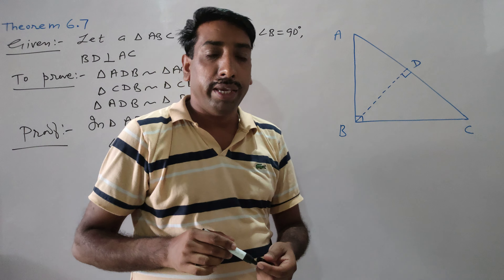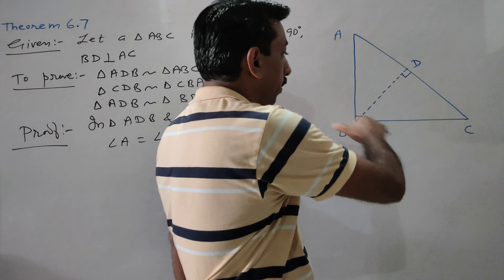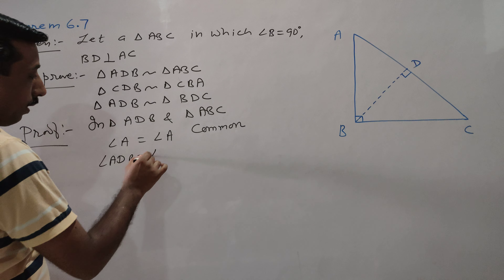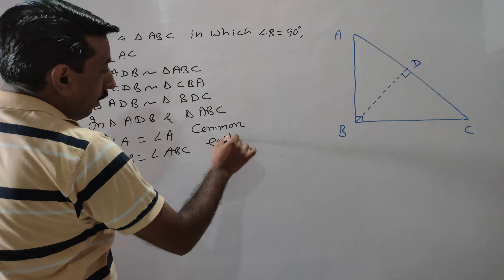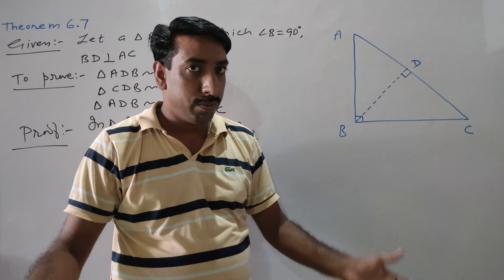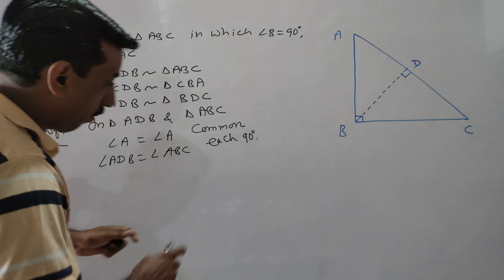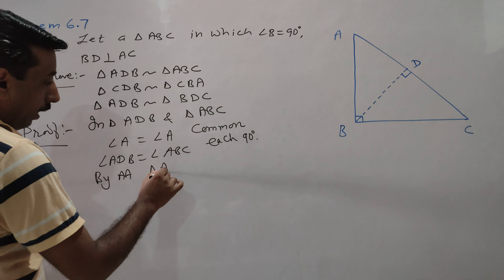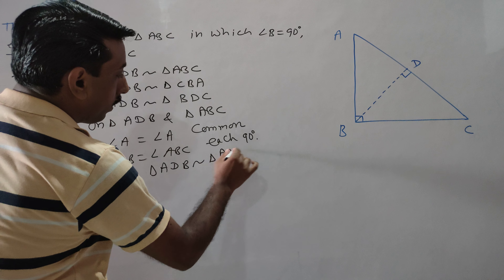In these two triangles, one angle is 90 degrees. Angle ADP equals angle ABC, which is 90 degrees. Since two angles of these triangles are equal, by the Angle-Angle criterion, triangle ADP is similar to triangle ABC.